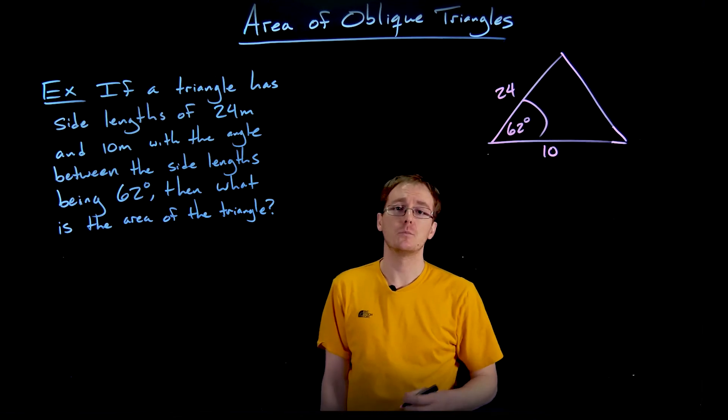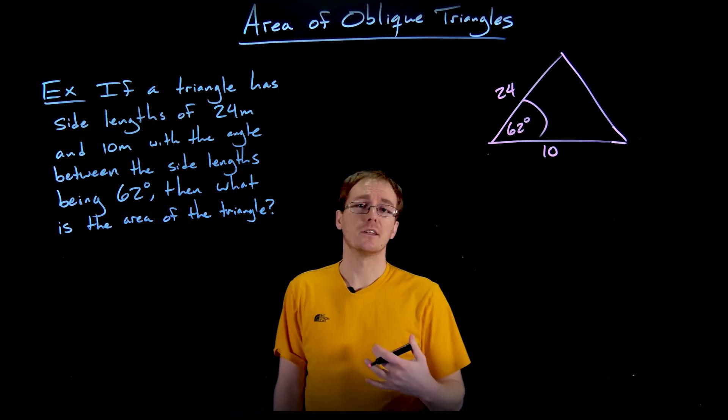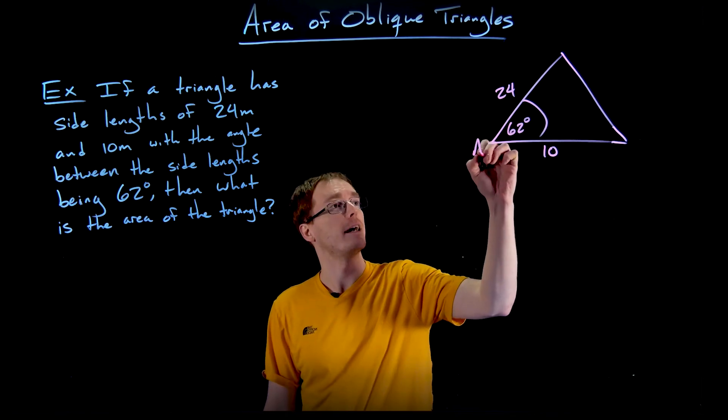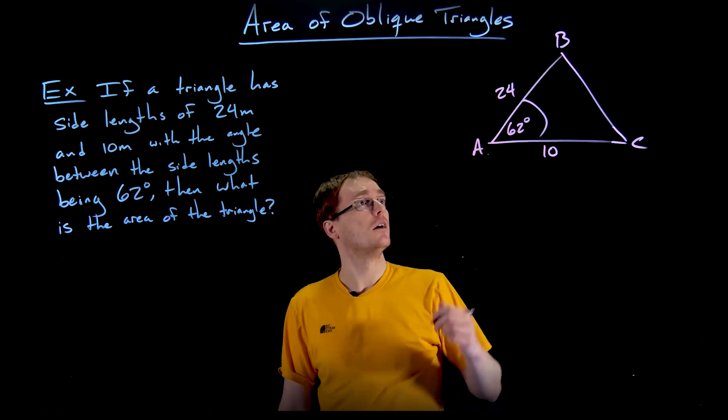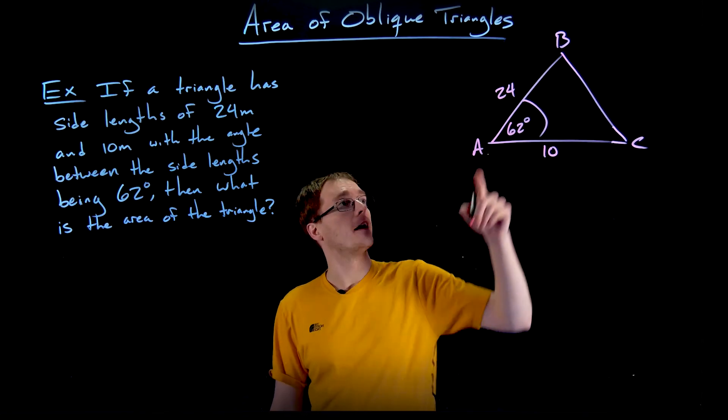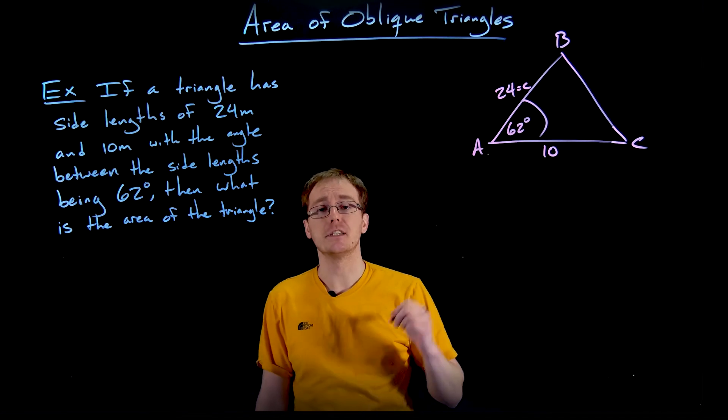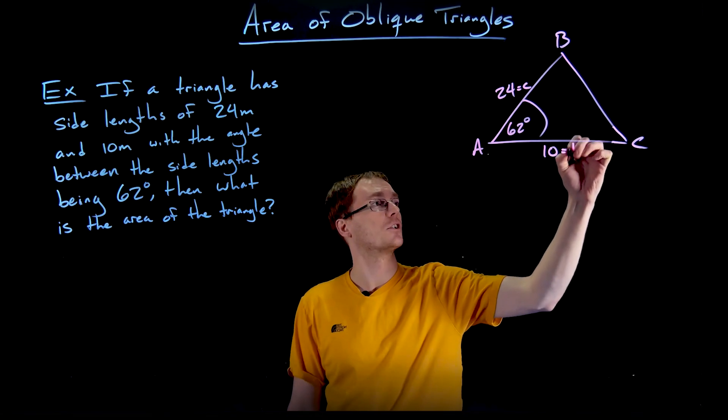So we have two side lengths of 24 meters and 10 meters, and we're told the angle between those two side lengths is 62 degrees. With that information, we want to find the area of this triangle. And so notice this triangle wasn't labeled as like A, B, and C. So we can add that labeling ourselves. Let's go ahead and call this angle A, this angle B, and this angle C. Well, by our initial labeling, then this would make 24 the side length opposite of angle C, and therefore side length C, and we make the side length of 10 our side length of B.